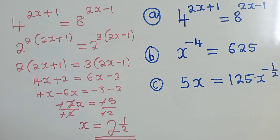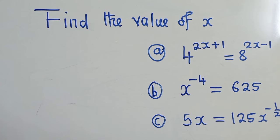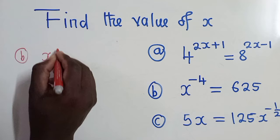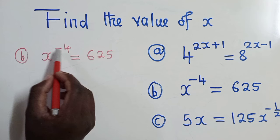We now go to question B. So for question B, we do almost the same. This is question B. We have x power negative 4 is equal to 625. So here, applying the laws of indices, we can't solve with a negative power. So we have to make sure that we have a positive power.